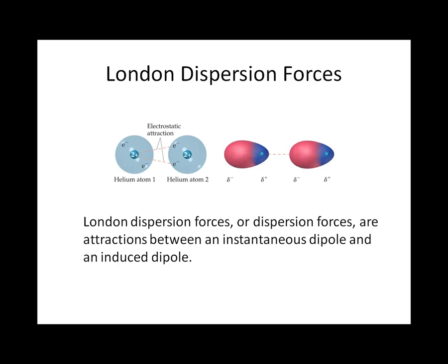First, let's review the three principal intermolecular forces. The first and weakest force is the London dispersion force. This is present between all molecules in the condensed phase and is generated by instantaneous differences in electron density that occur when different molecular orbitals come into contact with each other.